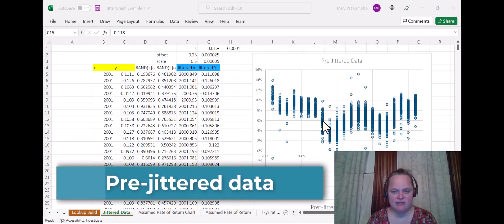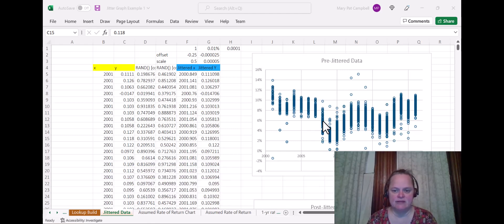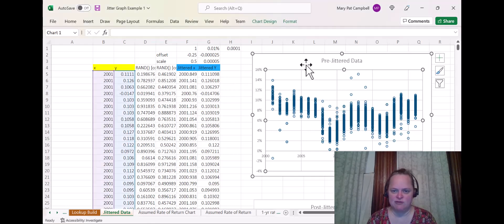So here's an example that I've got prepped. This is my data. The X values are the fiscal years, and my Y values are the average, I believe, five-year or maybe 10-year average returns from the public pensions. I can't remember, but it's average returns for the pension plans. And you can see there's a lot of overlap, and they're all lined up on the years, because of course, these are full years. So I do want to jitter this at least horizontally.